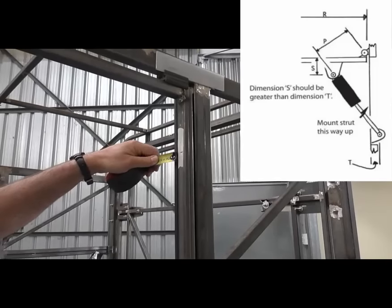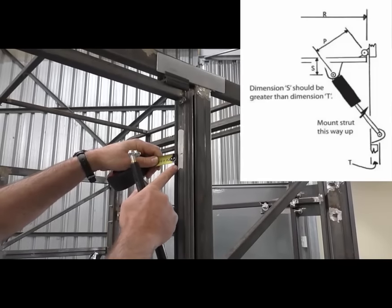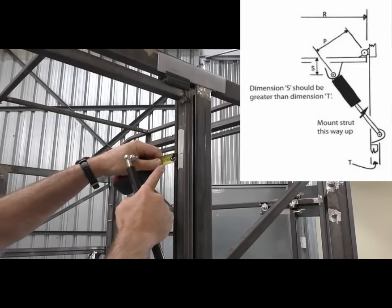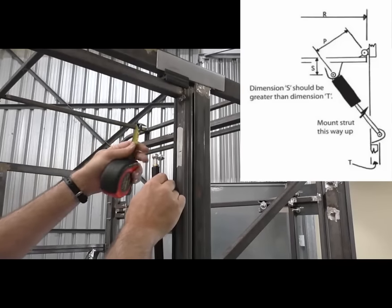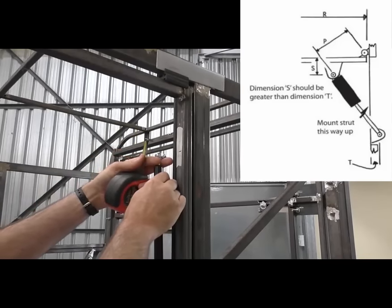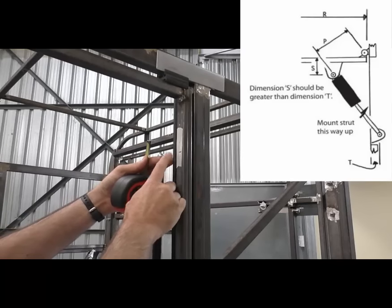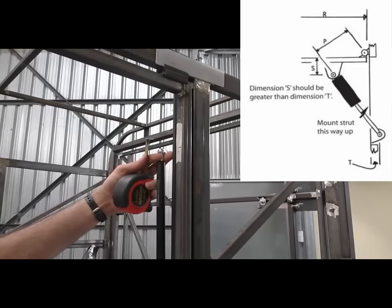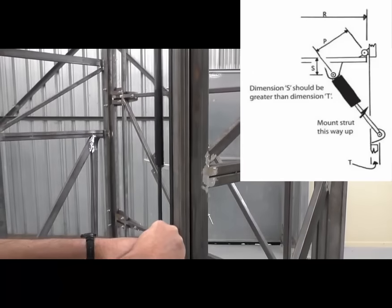The next dimension we need to sort out is the S dimension. In this case we'll make it 40mm from the back of the door to the top pivot point of the gas strut. The S dimension needs to be greater than the T dimension so that the door is actually closed by the gas strut.